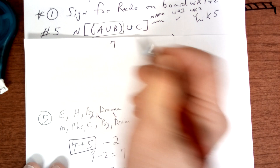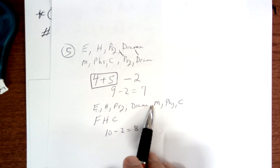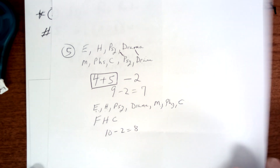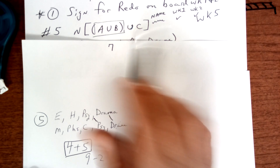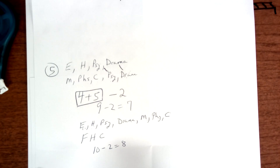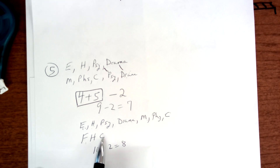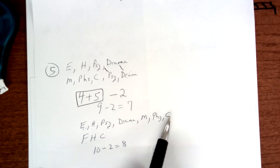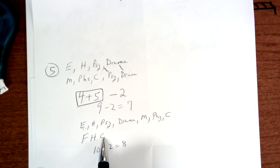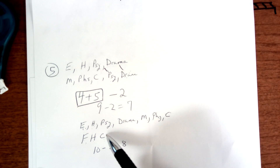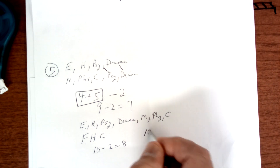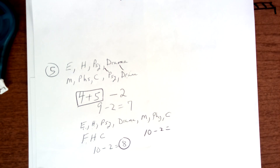Out of the first set, you get seven — here they are, all seven. Then if you combine that using the last one, union C, and you subtract the overlap: here's C — French, history, and chemistry. Add them up, you get ten, but the overlap is history and chemistry, so ten minus two gives you eight. Eight is the answer. That's how I work number five.